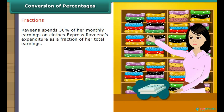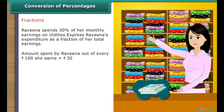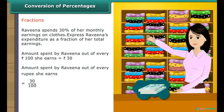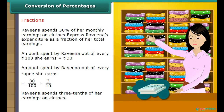Raveena spends 30% of her monthly earnings on clothes. Express Raveena's expenditure as a fraction of her total earnings. Amount spent by Raveena out of every 100 rupees she earns is rupees 30. Amount spent per rupee equals 30 upon 100, which equals 3 upon 10. Raveena spends 3/10 of her earnings on clothes.